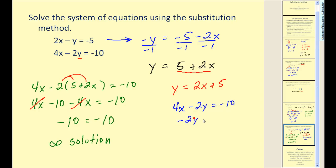Now we'll take equation 2 and solve this for y. We'll subtract 4x on both sides. Then divide by negative 2. And we can see that our second equation is also y equals 2x plus 5.